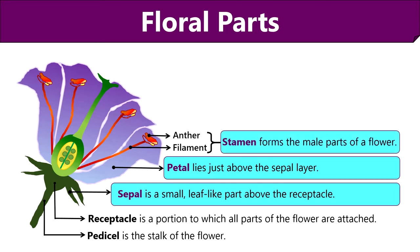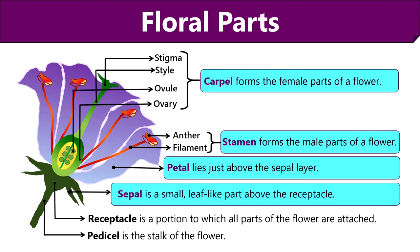Then stamen is the male reproductive part of a flower which comprises a knob-like anther and a slender filament. Anther is the structure carrying male gametes or pollens. Then carpel is the female reproductive part of a flower which comprises sticky stigma, stalk-like style, enlarged sac-like ovary and ovules containing the female reproductive egg cells. Therefore stamen and carpel form the reproductive portion of a flower.